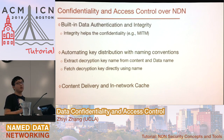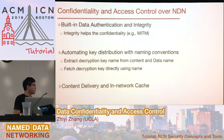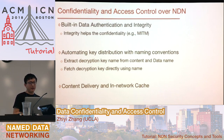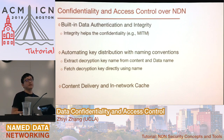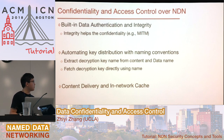We can extract the key name from the data packets and directly send out an interest packet for this key and fetch it back, without querying a DNS server to learn which IP address to go to — and DNS itself may not be secured. The last point is about content delivery and the in-network cache. You encrypt the content, consumers still need to build connections to fetch that content, but you can have your encrypted content cached in routers or data repositories for content delivery.